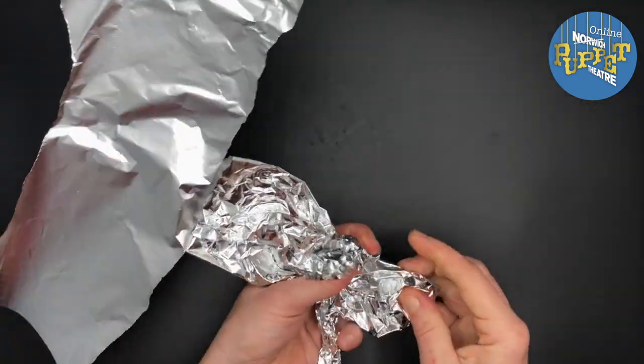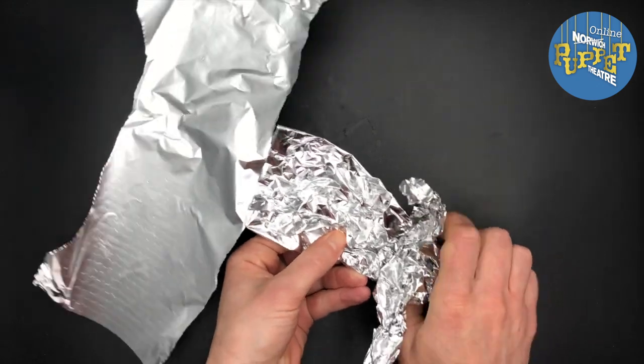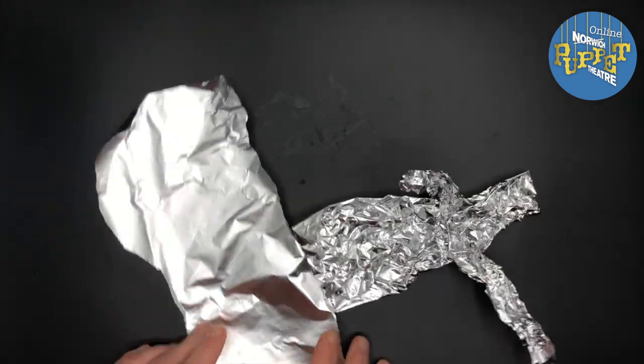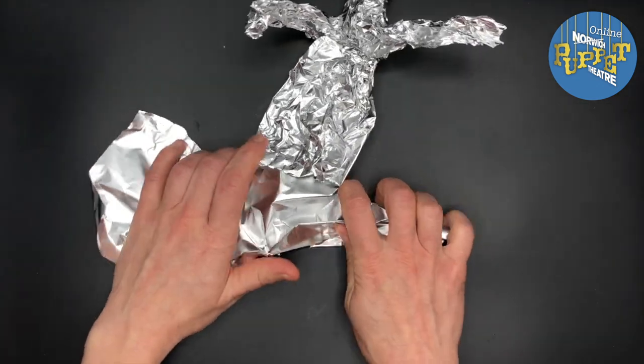So these are the front legs. Then there should be a bit of extra foil towards the back which you're going to scrunch to make your back legs.